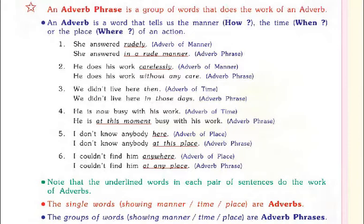Number three: 'We didn't live here then.' It is an adverb of time. Adverb phrase: 'We didn't live here in those days.' Fourth: 'He is now busy with his work.' The adverb 'now' is an adverb of time. The adverb phrase is: 'at this moment.' 'At this moment' is a group of words and it is showing us time, so it is an adverb phrase.